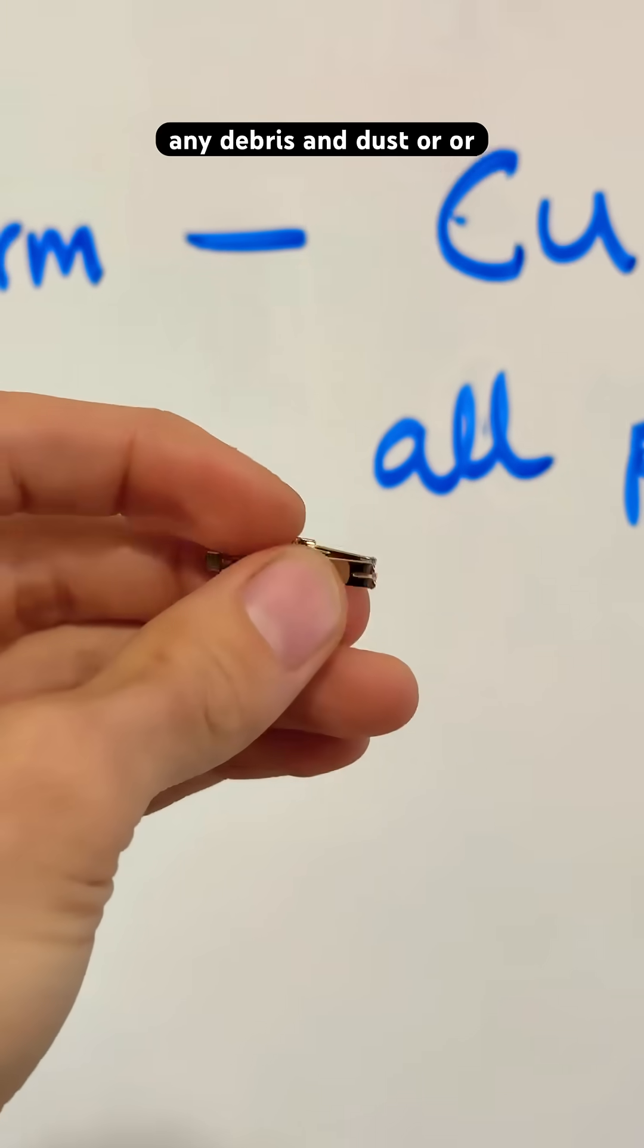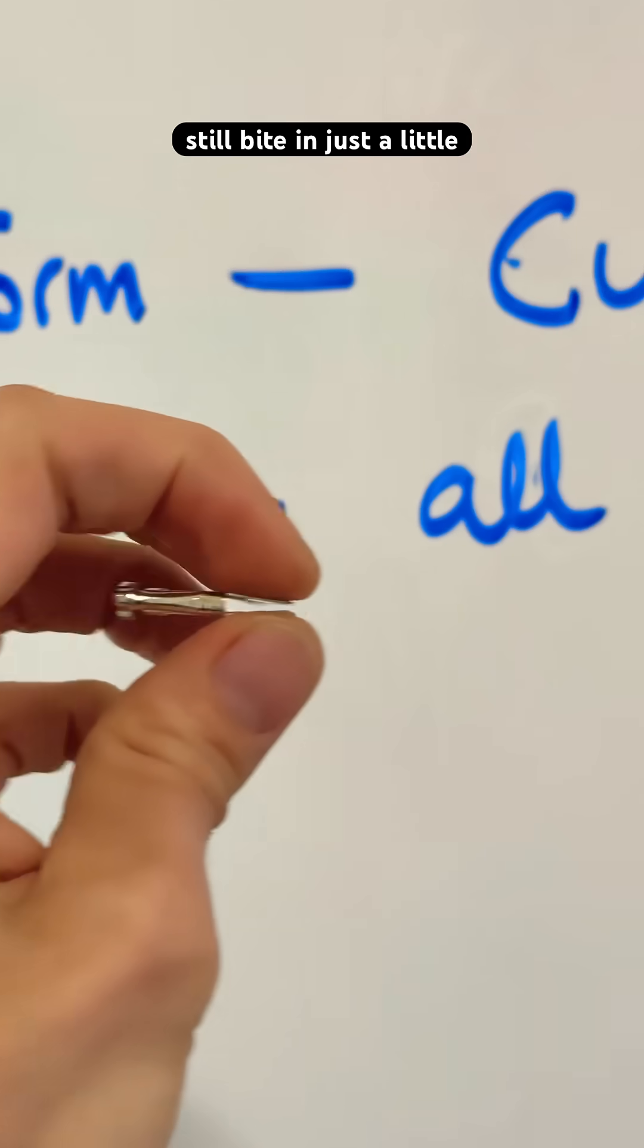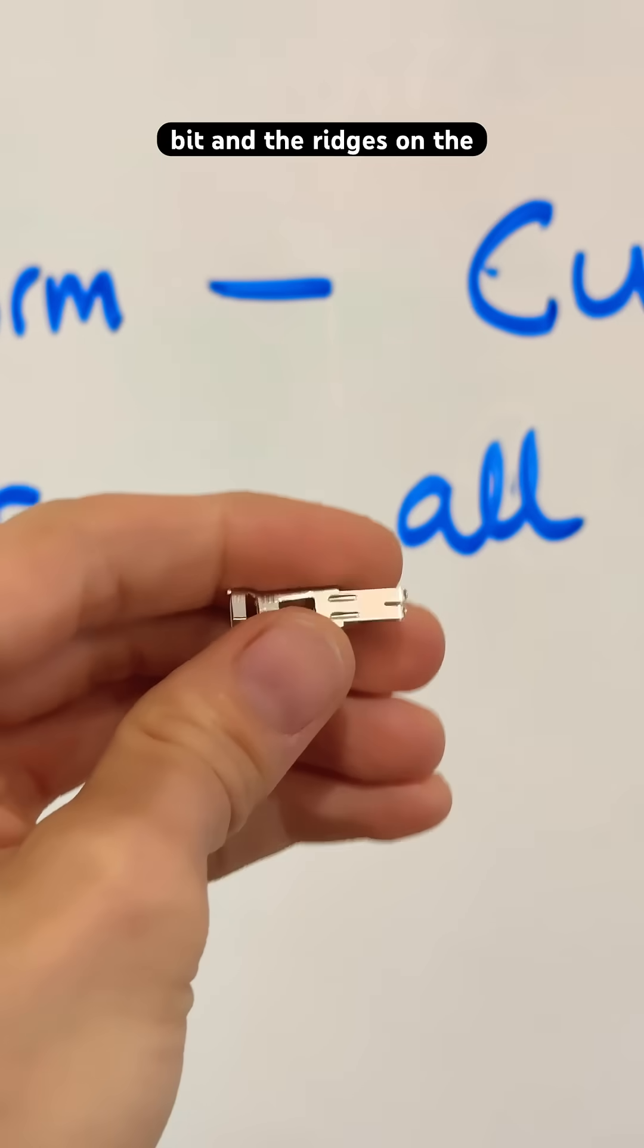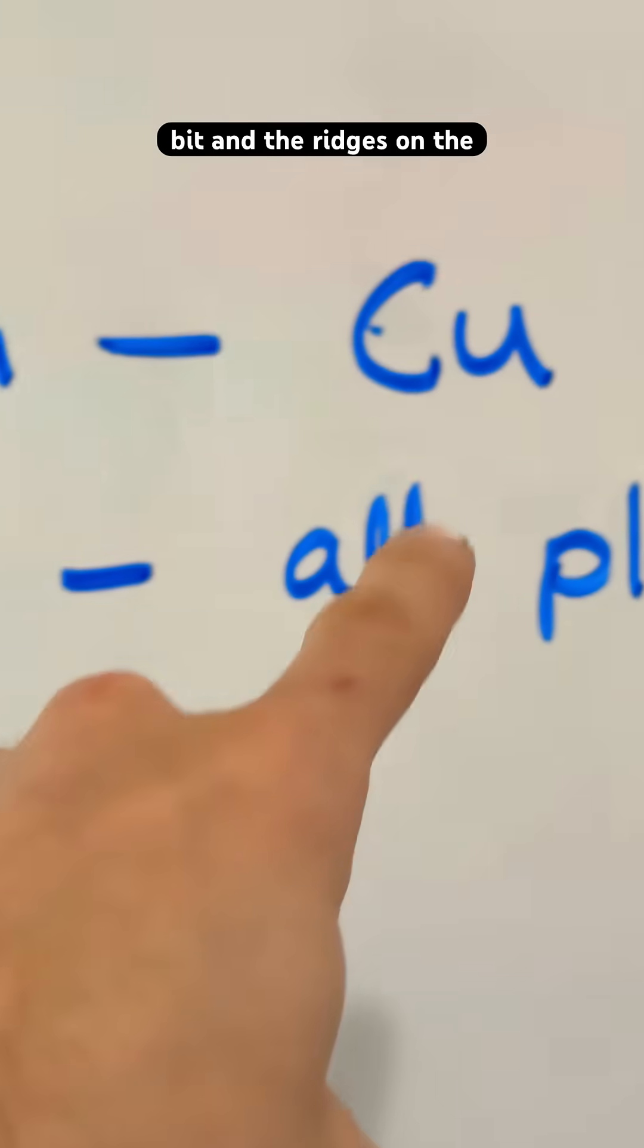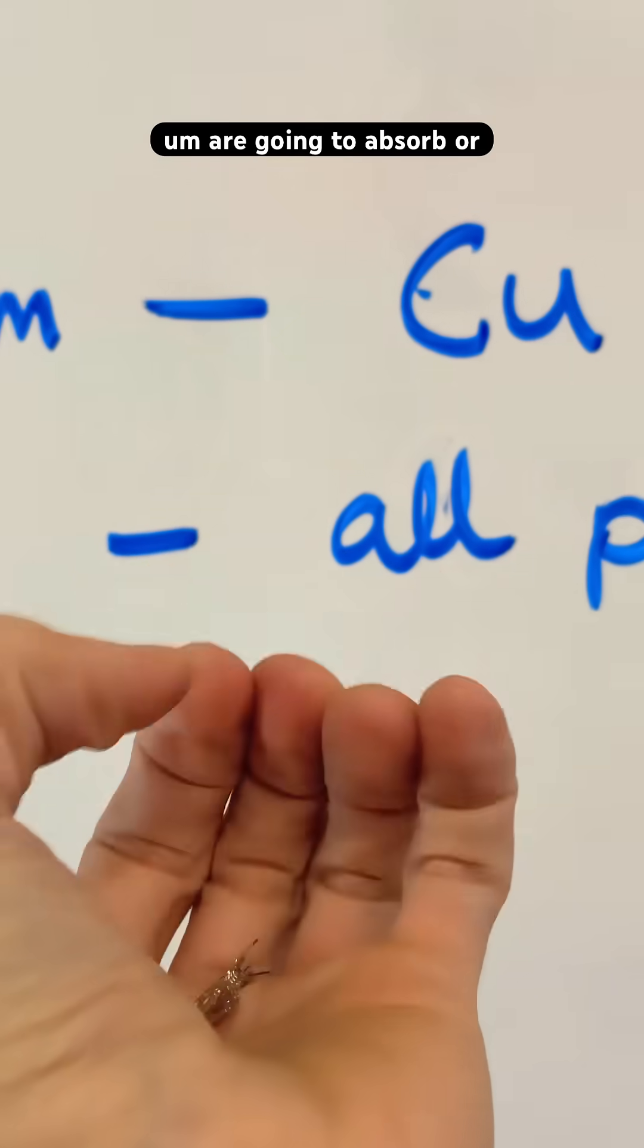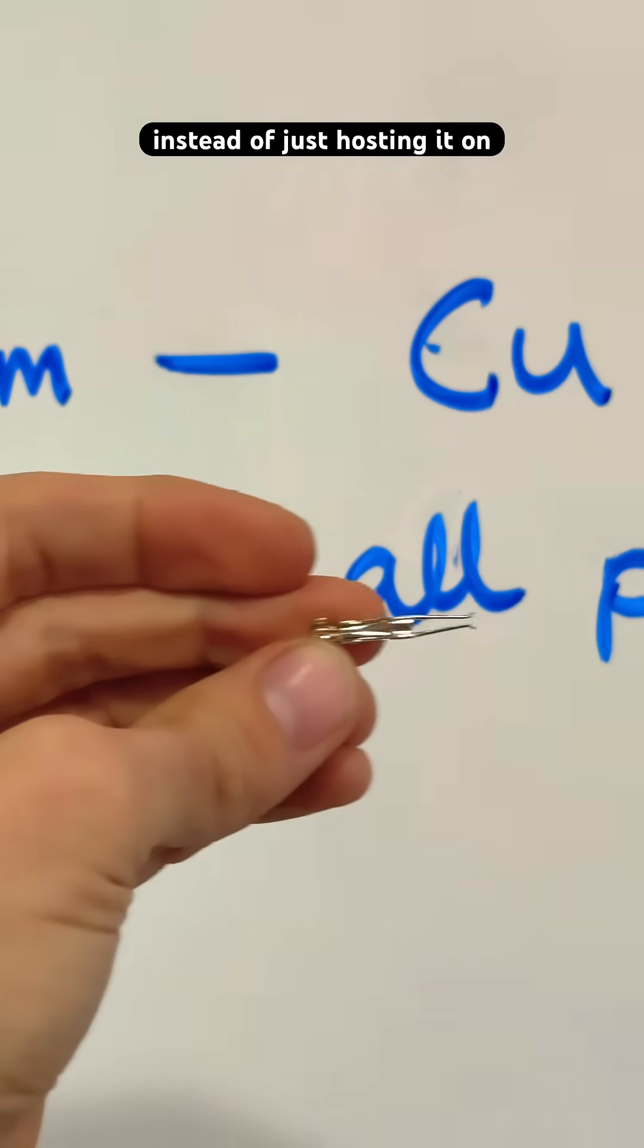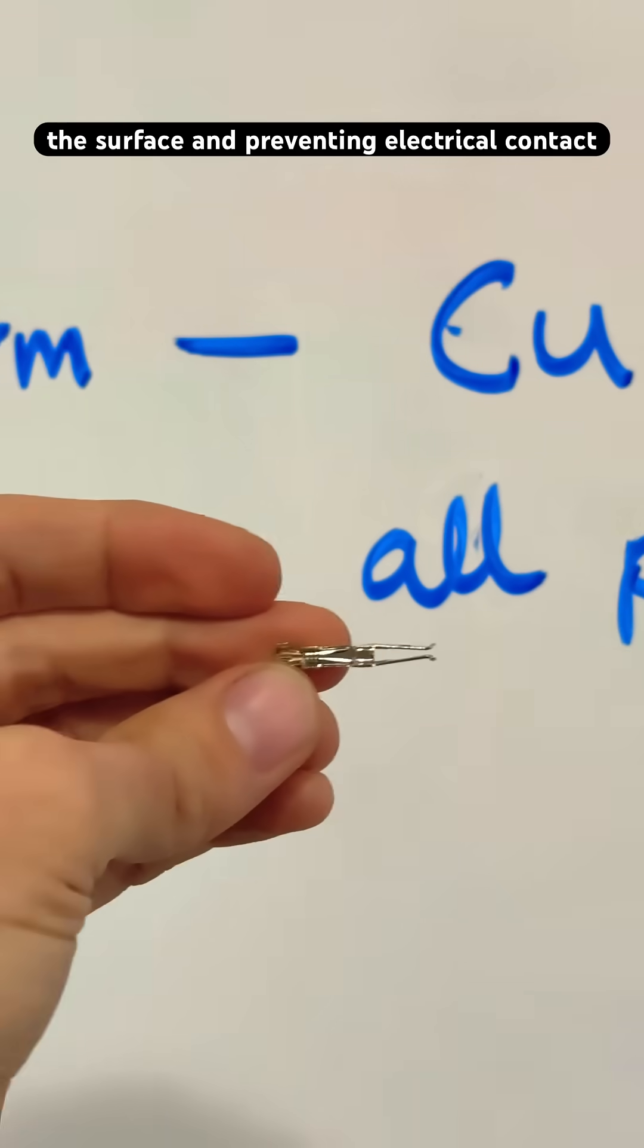So if there's any debris and dust or moisture in between those two, they still bite in just a little bit. And the ridges on the male part are going to absorb or kind of take in the debris instead of just hosting it on the surface and preventing electrical contact.